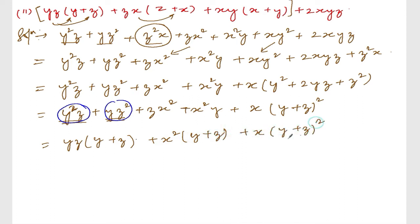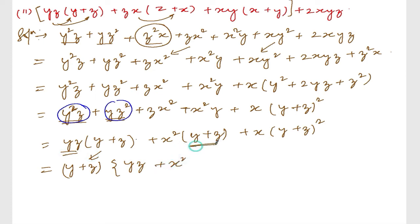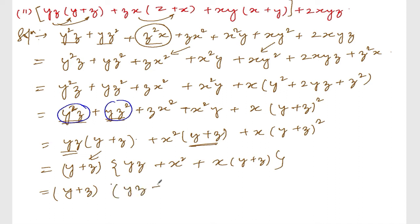Now take (y+z) common from everything. So (y+z) is taken out as common: from yz(y+z) we get yz, from x²(y+z) we get x², and plus x into (y+z). So inside the bracket it becomes: yz + x² + x(y+z), which expands to yz + x² + xy + xz.